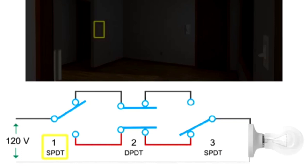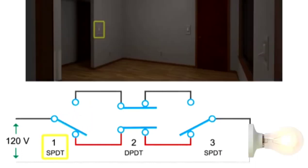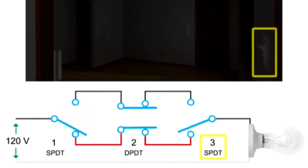Placing switch one now in the down position and switch three in the up position also results in a broken circuit, and current is unable to flow freely to the light bulb.